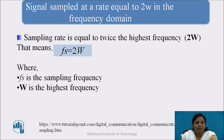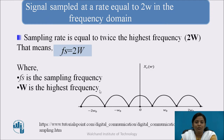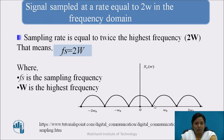If the sampling rate is equal to twice the highest frequency, that is fs = 2W, then X(ω) still repeats periodically with no overlapping, but the successive cycles of X(ω) just touch each other.